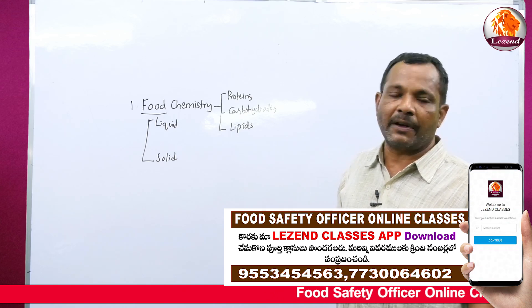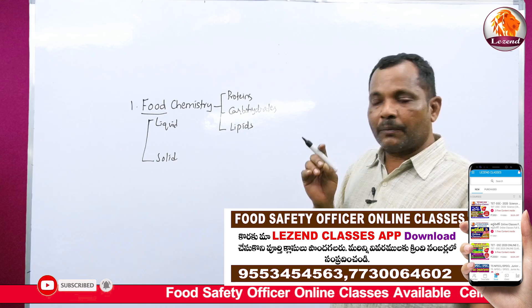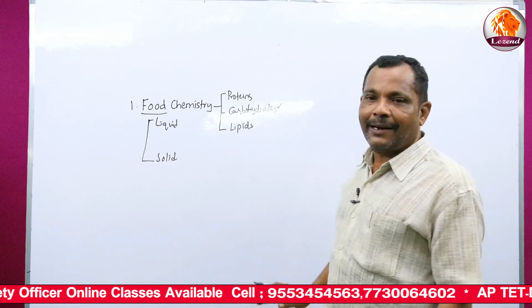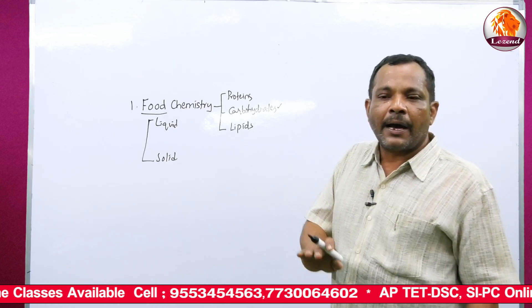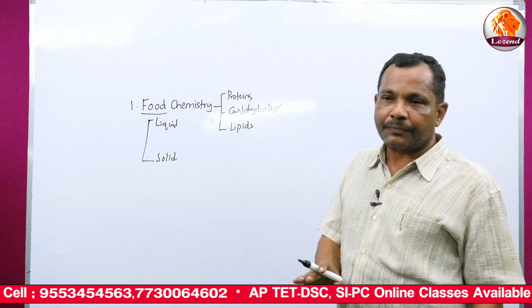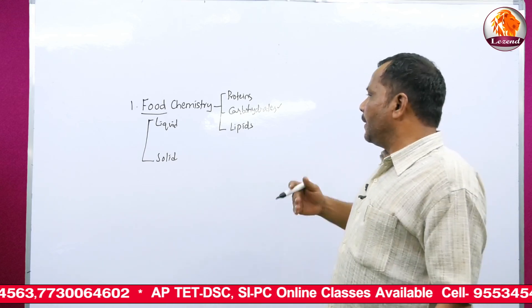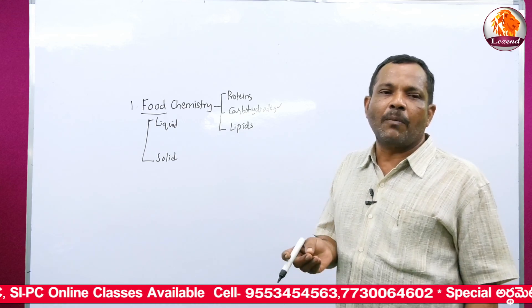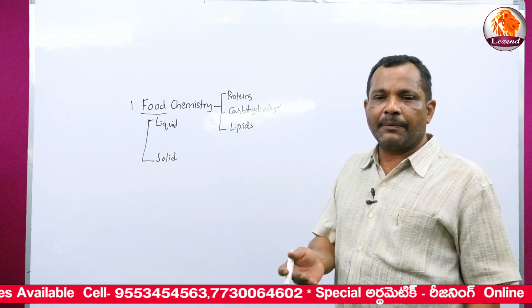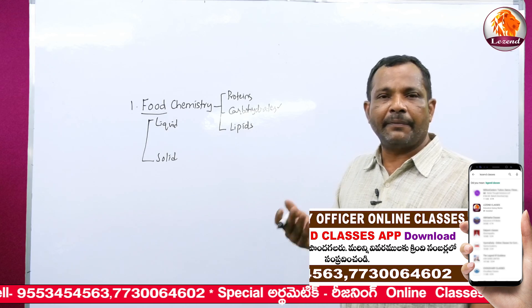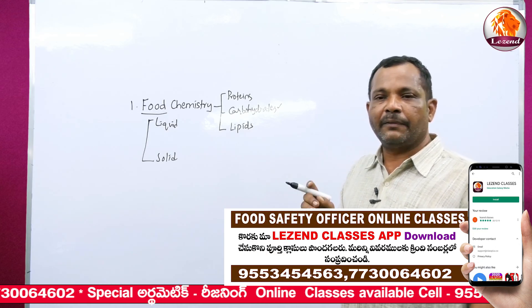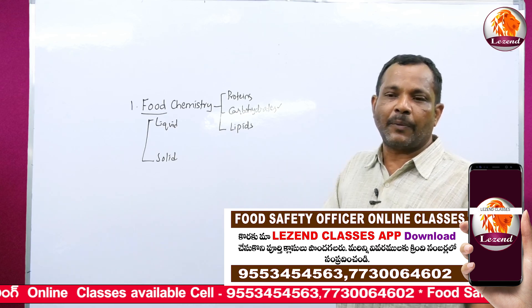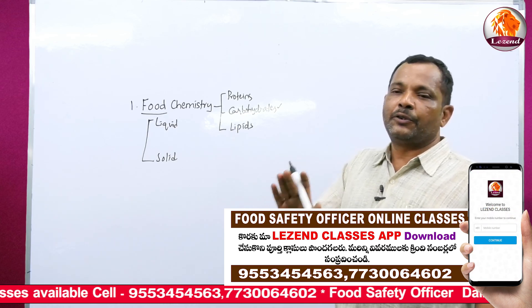Any substance, whether rich in carbohydrate, protein, or lipid, cannot be considered food unless it can be digested by enzymes. The best example is cellulose — cellulose is a polysaccharide that makes up newspaper or paper. Even though it is a polysaccharide, it cannot be taken as food because we don't have enzymes which can break down cellulose to yield energy. Food should yield energy — only then is it considered food.